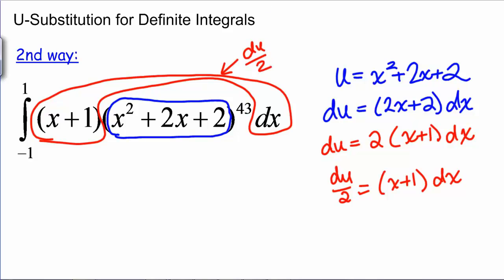So now we can take the (X plus 1) and the dx and together we can call these du over 2. And of course this inside, we're calling U. So our new integral is the integral of U to the 43rd times du over 2. But the real question is, what do we do with these limits of integration? I told you there was a quicker way than solving the problem entirely without the limits and then going back to X and then plugging the limits back in.